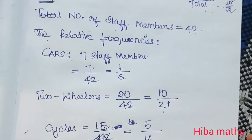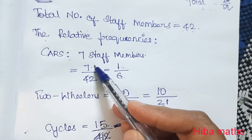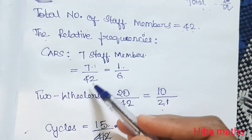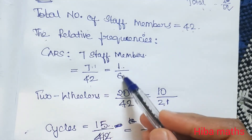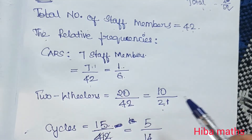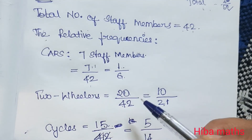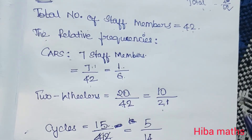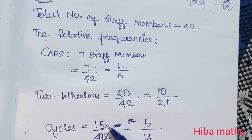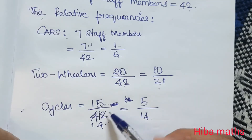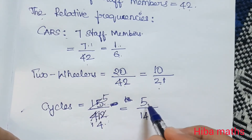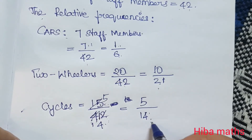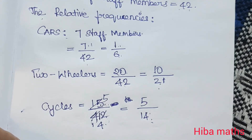Easy to understand. How many car use total number of staff? Cancel the answer. How many car use total number of staff? 2 tables divide — that is cycle. So 15 members, when the cycle use total 42, gives 5 by 14. Easy. Thank you so much for watching.